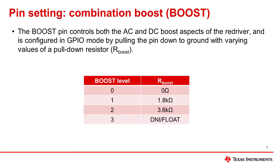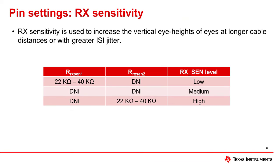The combination boost pin controls both the AC and DC boost aspects of the re-driver and is configured in GPIO mode by pulling the pin down to ground with varying levels of a pull-down resistor R-boost. You can pull the boost pin down using one of the listed configurations, with a higher level correlating with the signal being increasingly boosted. Please read the datasheet to ensure whether this pin is present and how it should be configured. RX sensitivity is used to increase the vertical eye heights of eye diagrams for longer cable distances or greater inter-symbol interference jitter. These are the recommended divider settings based on a 3.3 volt supply for VCC; however, these values may change based on VCC and the resistor values may need adjustment to meet the voltage level requirements for the RX sensitivity pin.